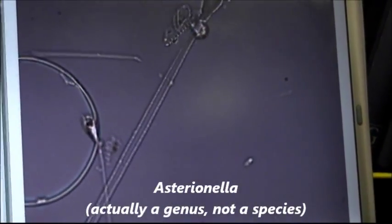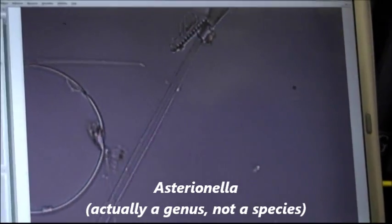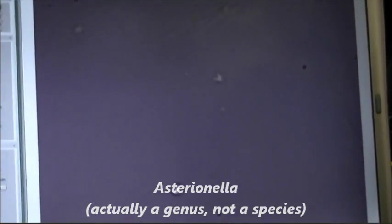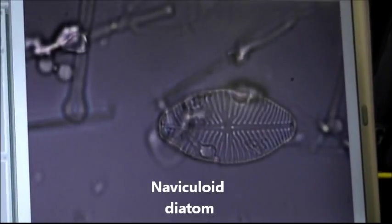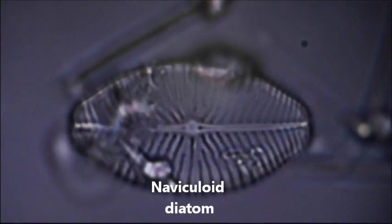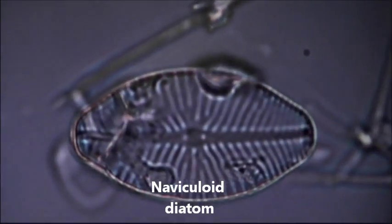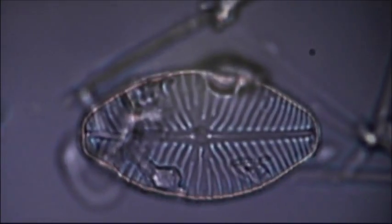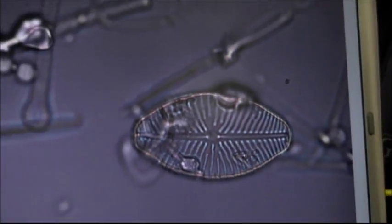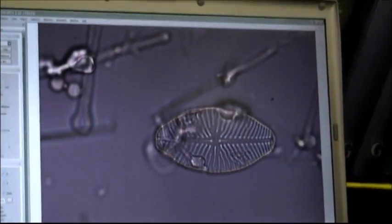That's a species called Asterionella, which is very common up here in northern Minnesota. There's another one of those naviculoid diatoms. And you notice how each species is very different looking. So lots of diagnostic information that allows us to specifically identify what species it is.